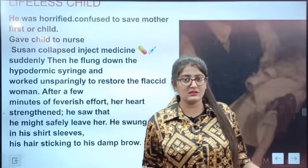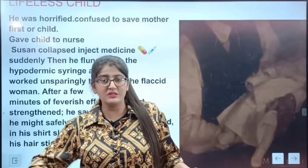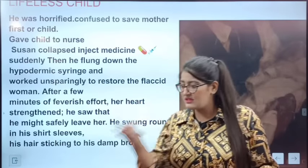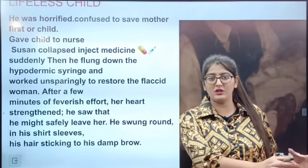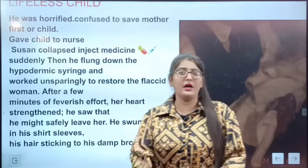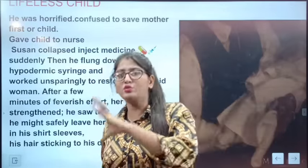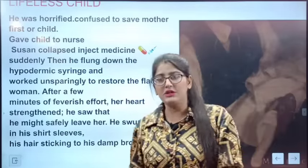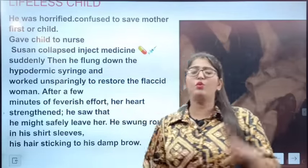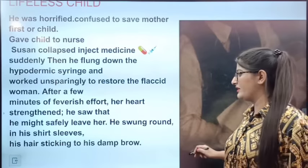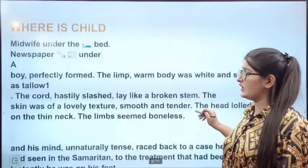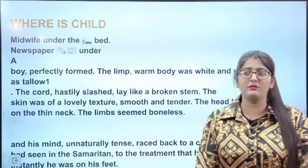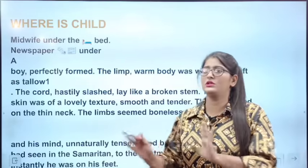There is a lot of confusion for Andrew. He could try to save the child as well as Suzanne, who had gone through a lot of pain. He first gives the baby to the midwife and then goes to Suzanne with a hypodermic syringe, gives her an injection, and treats her. Then he asks the midwife where the child is.